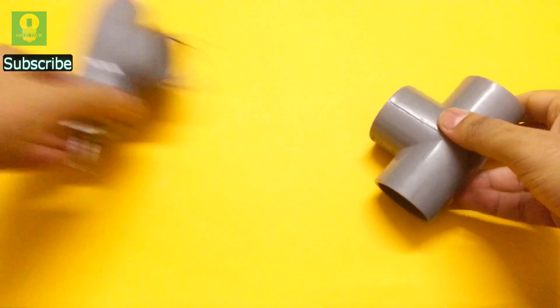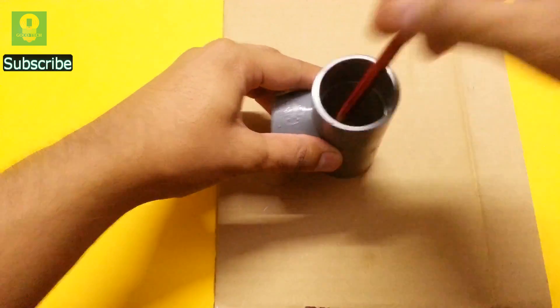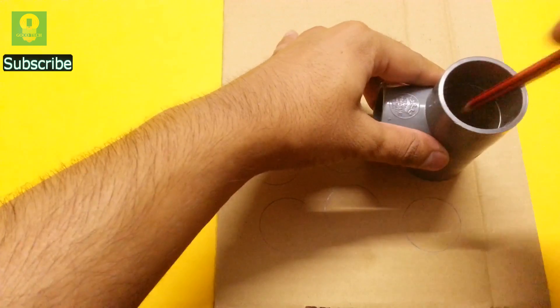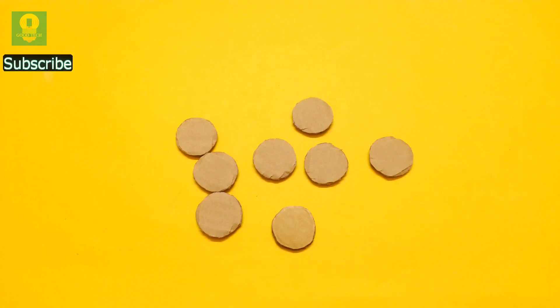Take another PVC tee and a piece of cardboard. Draw a few circles on the cardboard equal to the diameter of the PVC tee. Cut all the circles carefully.